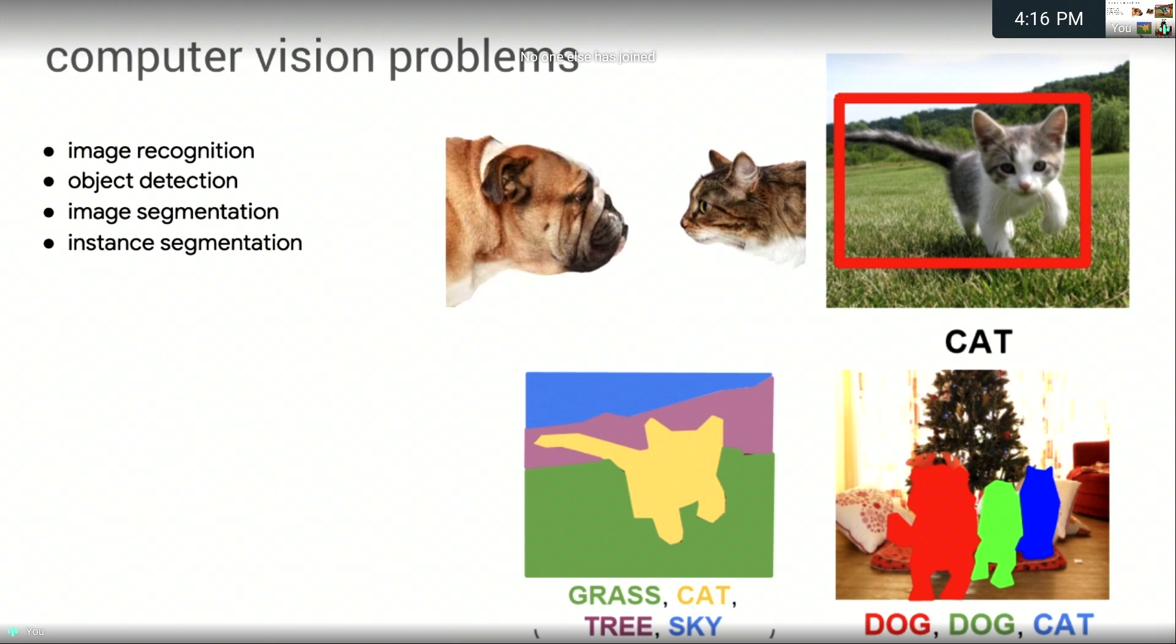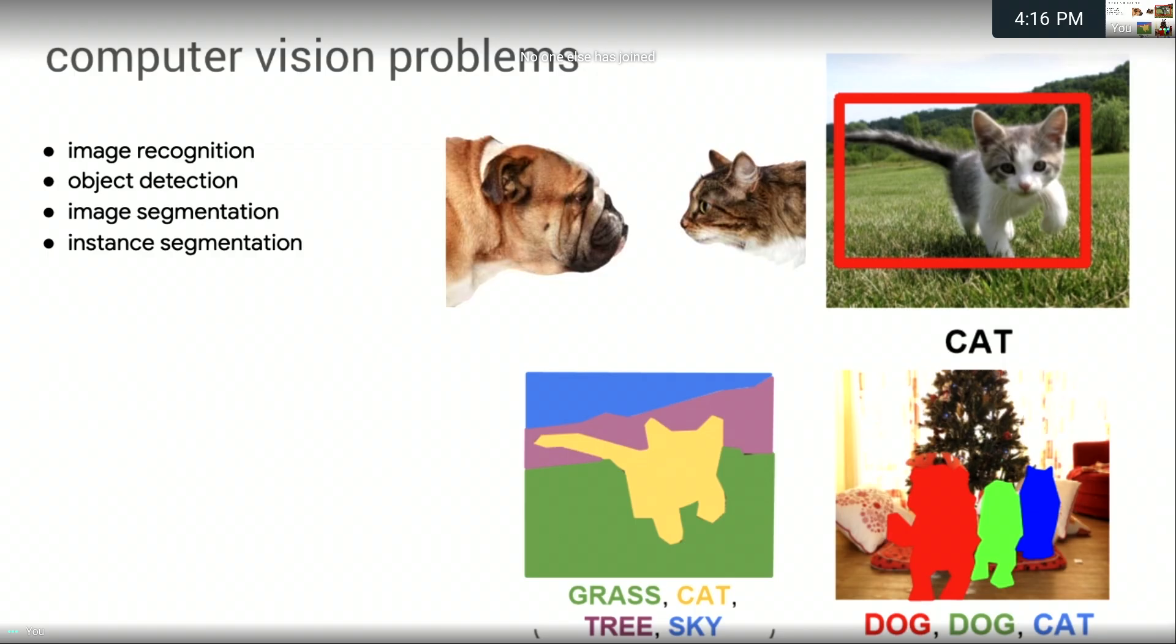Computer vision is a very large field. Four well-known areas are here. To put them in the canonical cat and dog example set, we have image recognition or is this a cat or dog picture. Object detection or where is the cat in this picture. Image segmentation or which pixels are cat pixels. And then finally, instance segmentation. How many sets of cat pixels do we have in this picture?